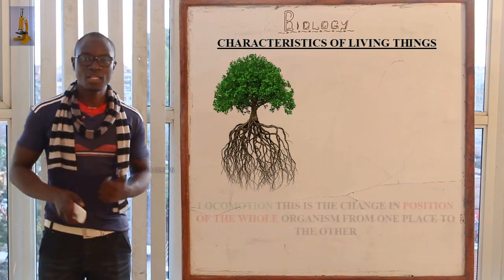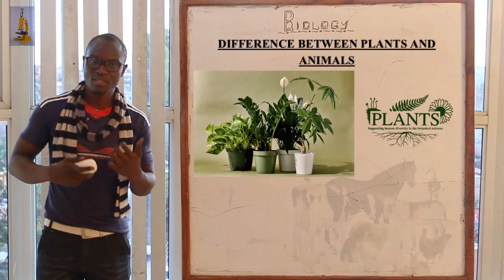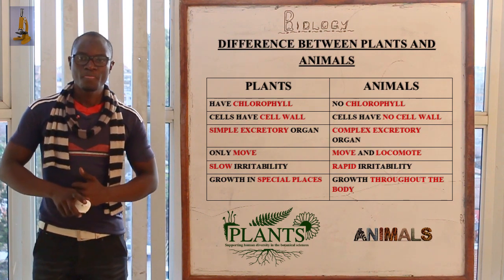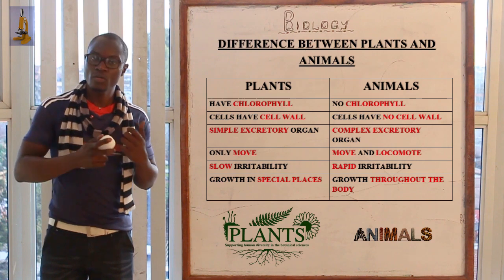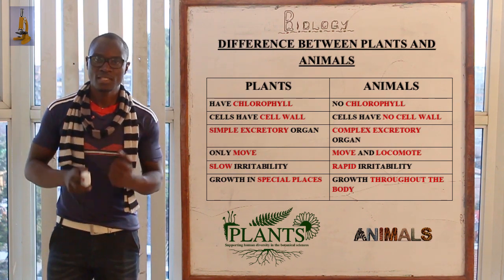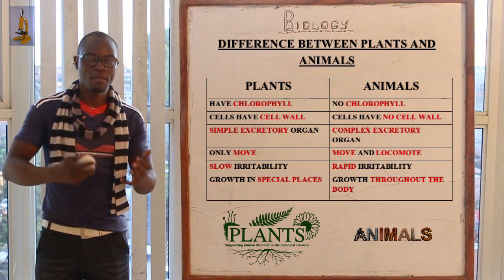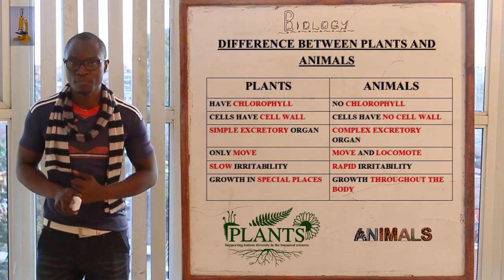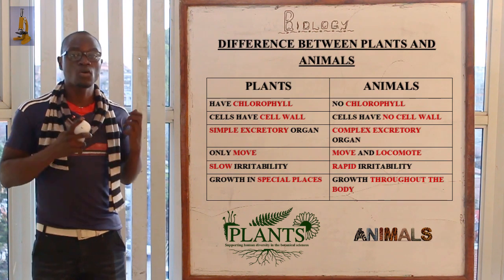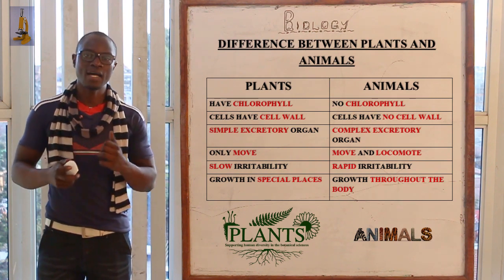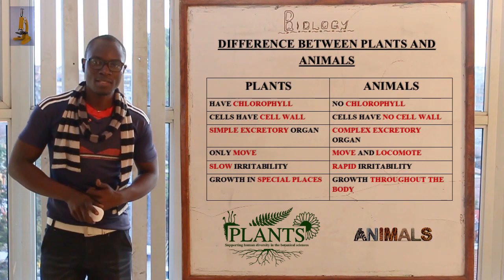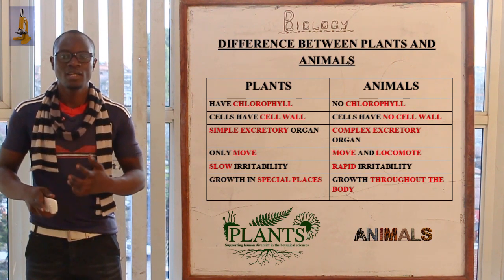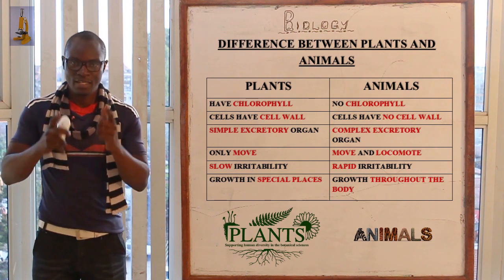Now let's look at differences between plants and animals. Plants have chlorophyll while animals do not. Plants have a cellulose cell wall while animals do not. Plants have a simple excretory system while animals have a complex one. Plants only move while animals move and locomote. Plants respond slowly to environmental changes while animals respond rapidly — that is under irritability.